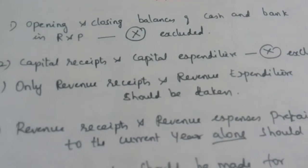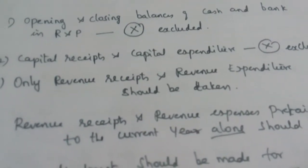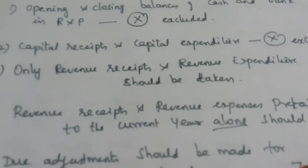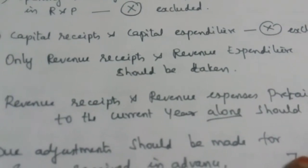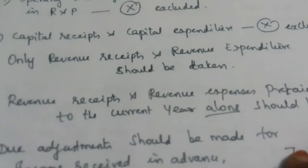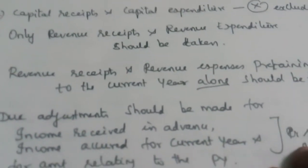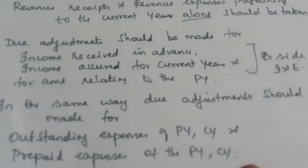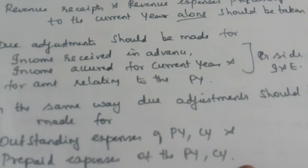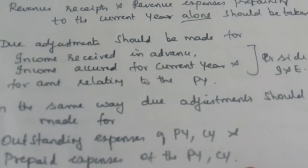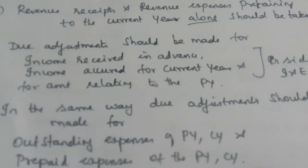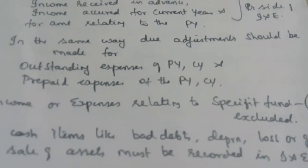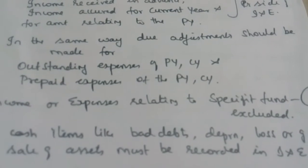In this module, I will tell you what are all the capital receipts and capital expenditure — we will discuss at the end of this module. If capital expenditures and capital receipts are excluded, it means we have to record only the revenue receipts and the revenue expenditure for the current year alone, excluding the previous year or the subsequent year. Due adjustments should be made for income received in advance or income accrued for the current year, and amounts relating to the previous year. Similarly, adjustments should be made for outstanding expenses and prepaid expenses of the previous and current year.